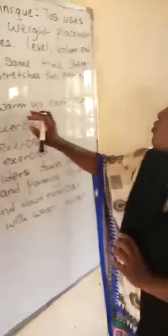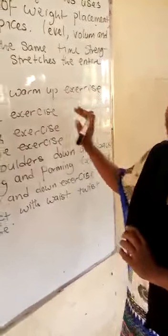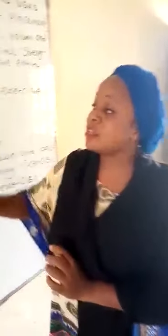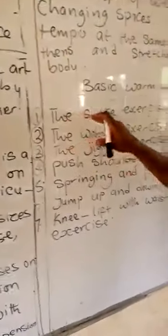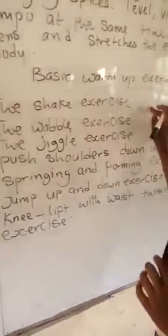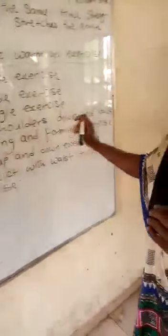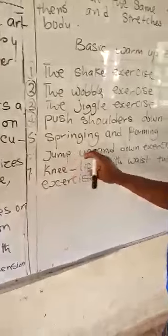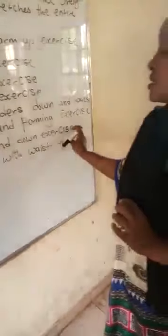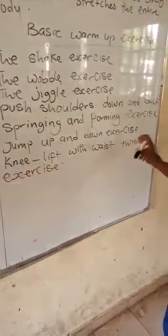Then we have basic warm-up exercises. One, the shape exercise. Two, the wobble exercise. Three, the jiggle exercise. Four, push shoulders down and back. Five, the springing and foaming exercise. Six, jump up and down exercise. Seven, knee lift with waist twist exercise. This is all about techniques of dance.